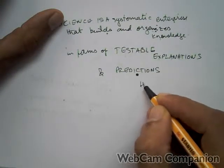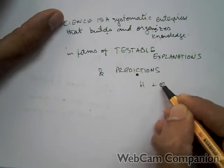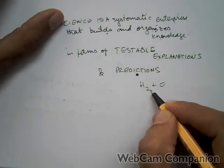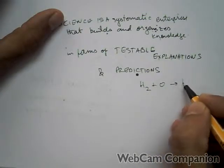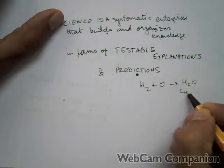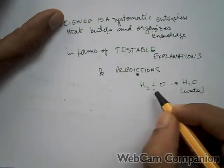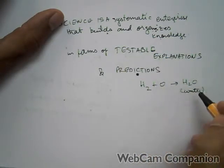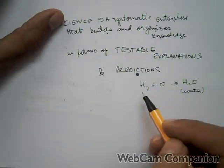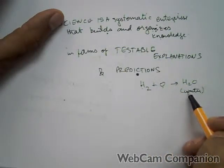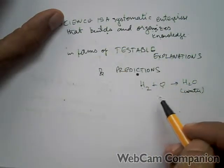For example, if you combine hydrogen and oxygen—two atoms of hydrogen and one atom of oxygen—this will produce H2O, which is water. Each time you repeat this, you'll get water. It will always predict that if you combine hydrogen and oxygen, you get water, and this will hold true at all times.